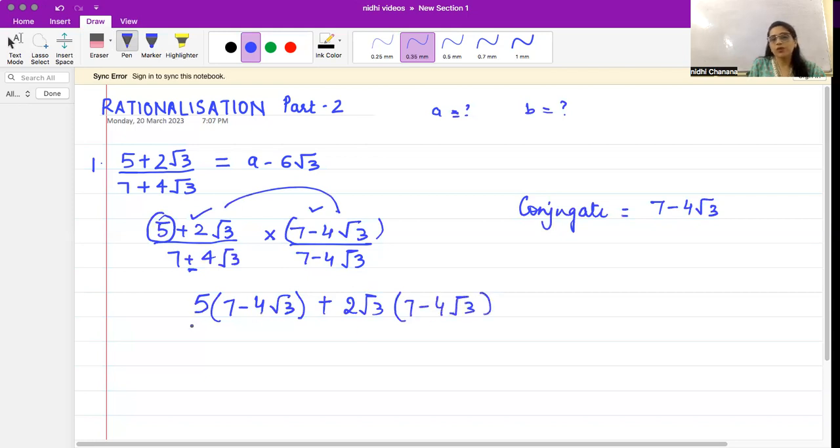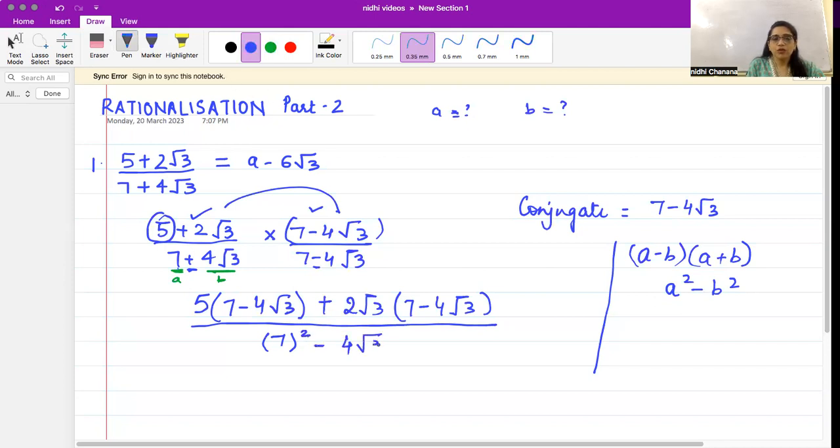Now let's go to the denominator. In the denominator we learned last video how to use identities. Here you have 7 + 4√3 and 7 - 4√3. That means we can use a - b and a + b, which is the identity a² - b². So here a is 7 and b is 4√3. So a² will be 7² minus b², so a² will be (4√3)².